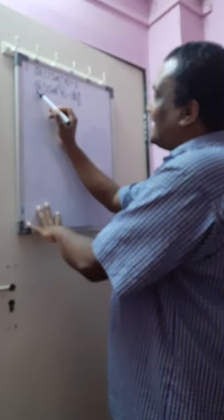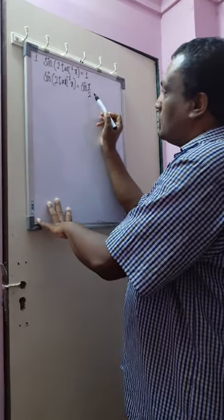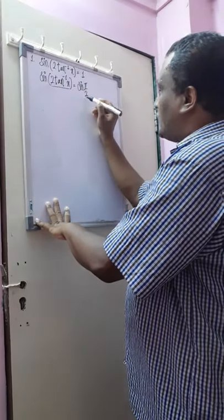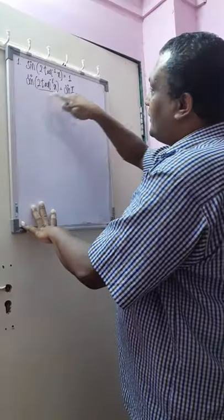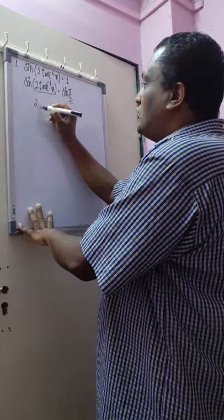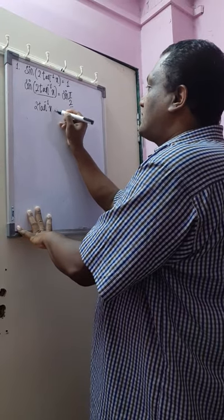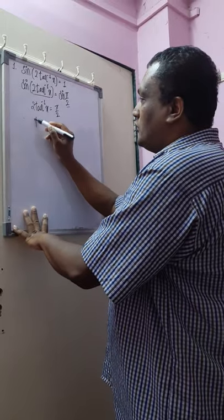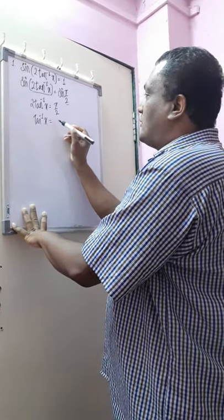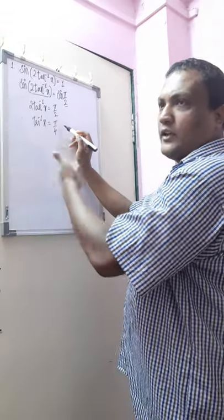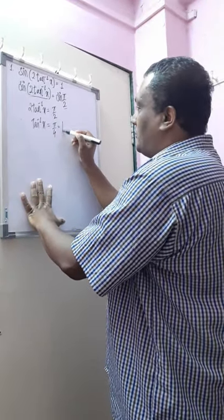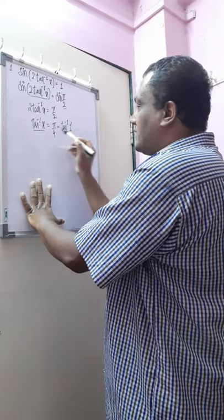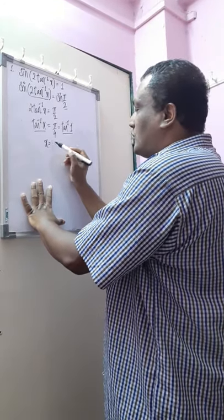If you notice, there is a sine on this side and a sine on this side as well. The angle of sine on one side is 2 tan inverse of x, and the angle on the other side is pi by 2. So if I compare the two angles, I get 2 tan inverse of x is equal to pi by 2. I can push this 2 down, so I get tan inverse of x equal to pi by 4. Pi by 4 can be written as tan inverse of 1, so comparing, x is equal to 1.